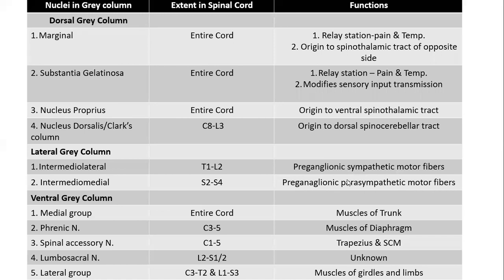These parts of the autonomic nervous system will be revisited in the detailed topic of autonomic nervous system. Moving to the ventral gray column: it comprises the medial group, present over the entire cord, supplying the trunk muscles. The phrenic nucleus — referring to the diaphragm — is present from the third to fifth cervical segment and is related with the muscles of the diaphragm. The spinal accessory nerve nucleus is present from C1 to C5.